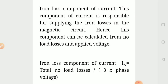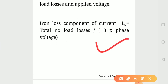Now, what is the iron loss component in the circuit? It is responsible for supplying the iron loss in the magnetic circuit, so it is calculated from the no-load losses. The formula for the iron loss component is: Iw equals total no-load loss divided by 3 times the phase voltage.